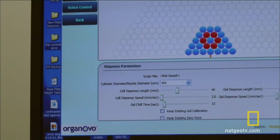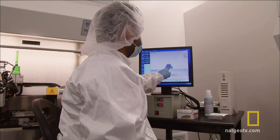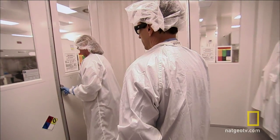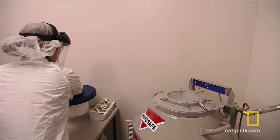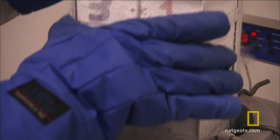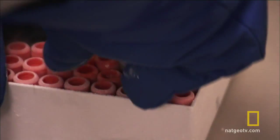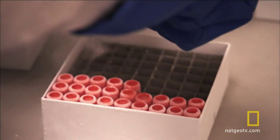Turning virtual cell structure designs into reality is the challenge. First you need the raw materials, the bio ink for the printer. In this case human liver cells which remarkably are similar in size to the droplets of ink in an inkjet printer.